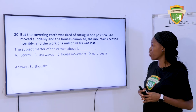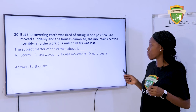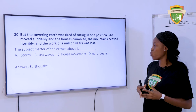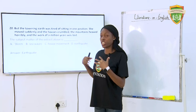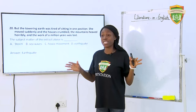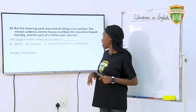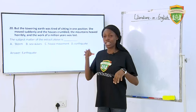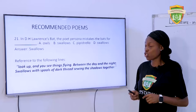Question 20: 'But the towering earth was tired of sitting in one position. She moved slowly and the houses crumbled. The mountains heaved horribly and the work of a million years was lost.' The subject matter of the extract above is — A. Storm. B. Sea waves. C. House movement. D. Earthquake. The answer is earthquake, because there are pointers: the earth was in one position, houses and trees were stable, and then she moved slowly — indicating movement on the earth's surface, houses crumbled, pointing clearly to an earthquake.